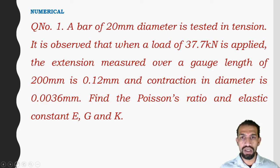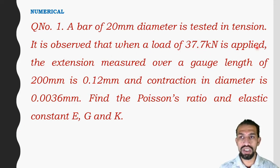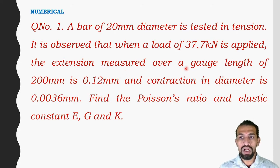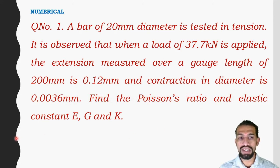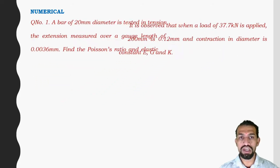Numerical number one: a bar of 20 mm diameter is tested in tension. It is observed that when a load of 37.7 kilonewton is applied, the extension measured over a gauge length of 200 mm is 0.12 mm and contraction in diameter is 0.036 mm. Find the Poisson's ratio and elastic constants E, G, and K.